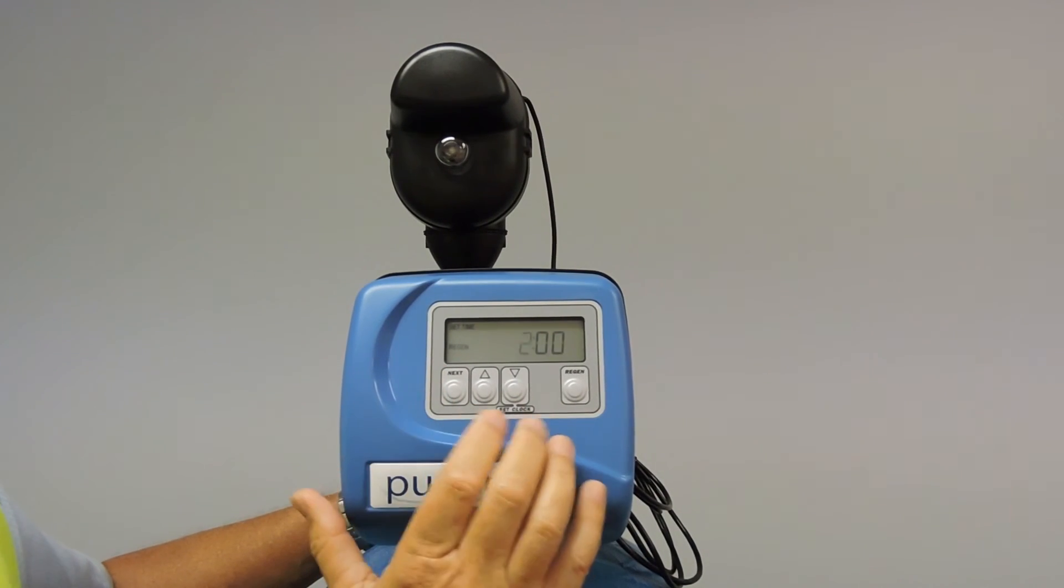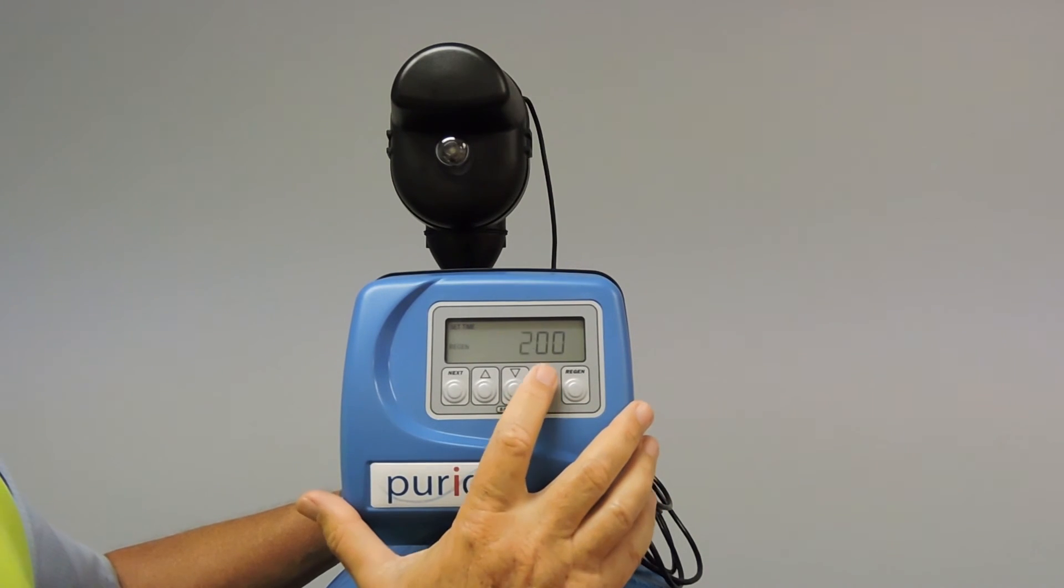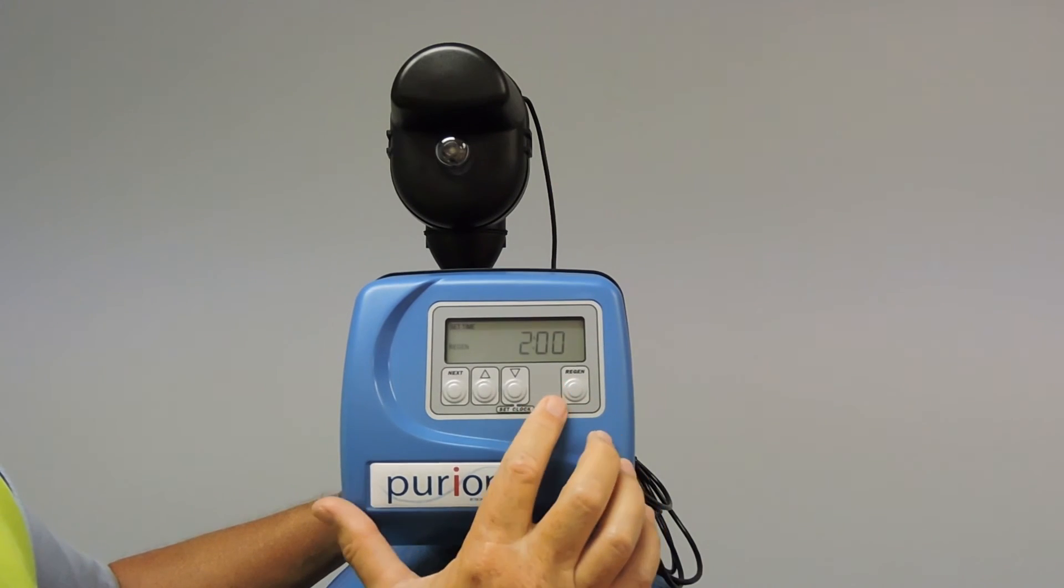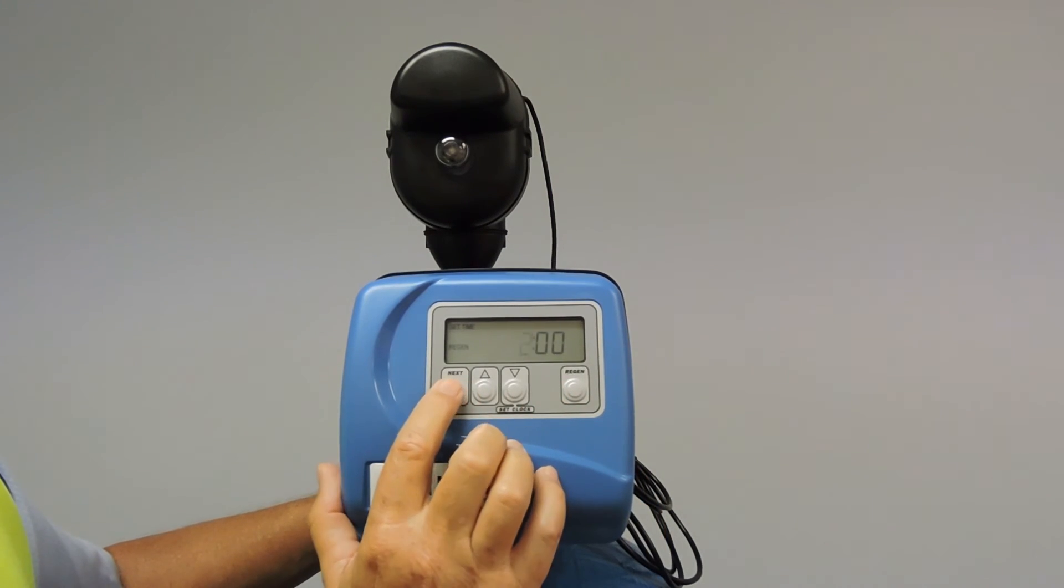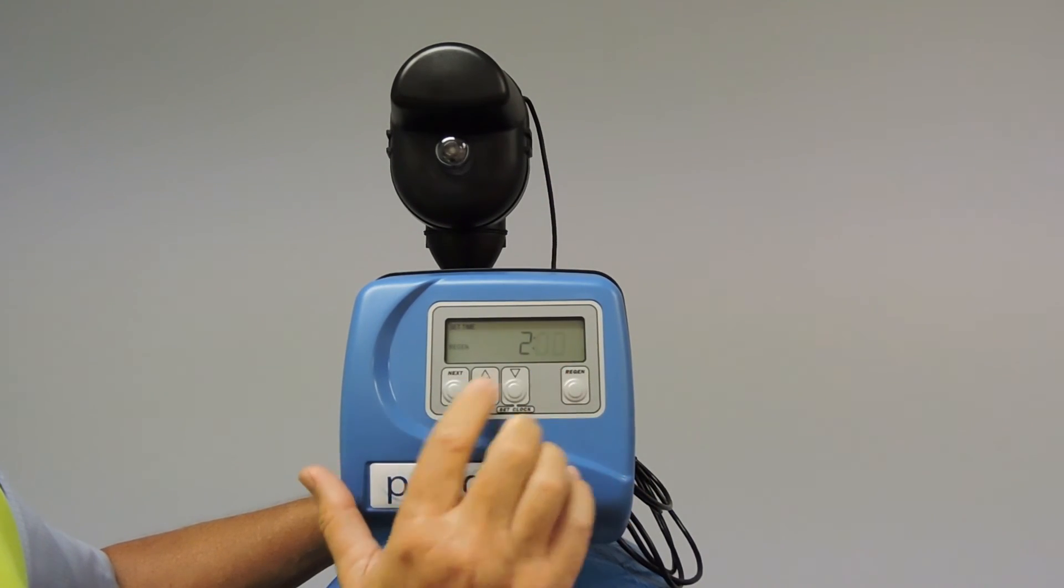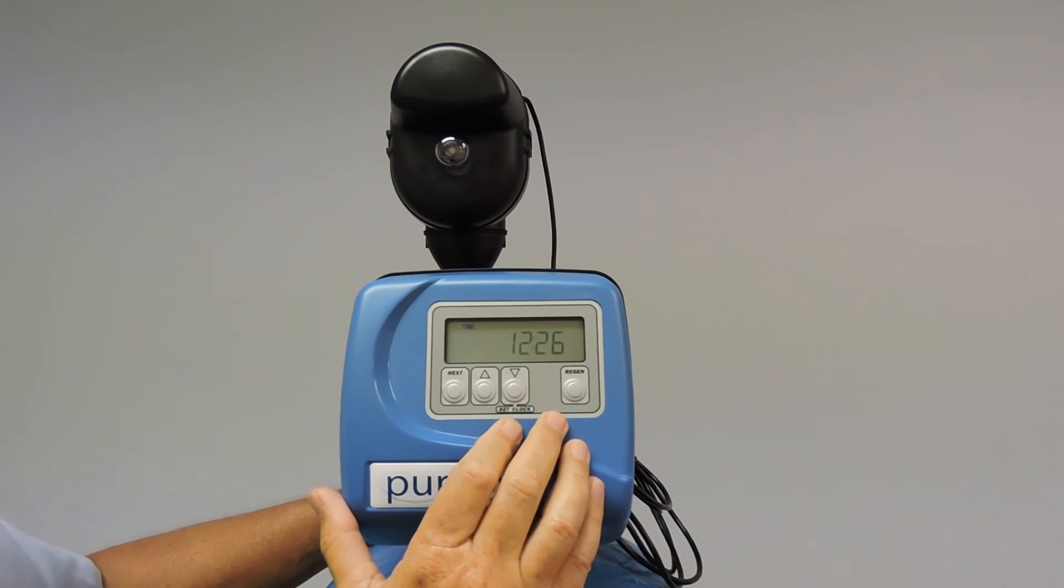And then this is your regen time. It is 2 o'clock in the morning, which is a convenient time because theoretically no water is being used. So we will accept 2 o'clock. If you need to change it, you simply just change the time of day. So next sets your hours. Then the minutes will be flashing. And we will accept that again. Then you're back to time of day.